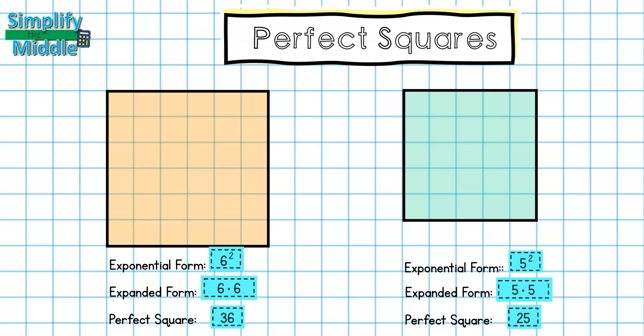Notice that all of the squares that we got—1, 4, 9, 16, 36, 25—are all representing the area of a square shape.